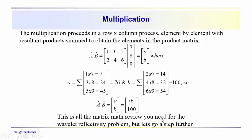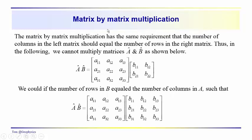This is basically all the matrix math you need to do the wavelet-reflectivity matrix problem, but let's go a little further. For matrix-by-matrix multiplication, the same requirement applies: if the multiplier has three columns, the term on the right must have three rows. So we can't multiply matrix A times matrix B if matrix B only has two rows — it's not going to work.